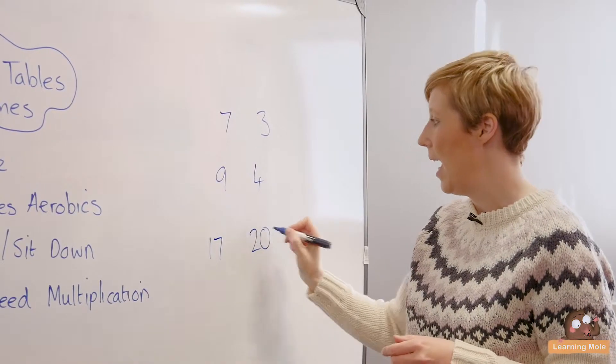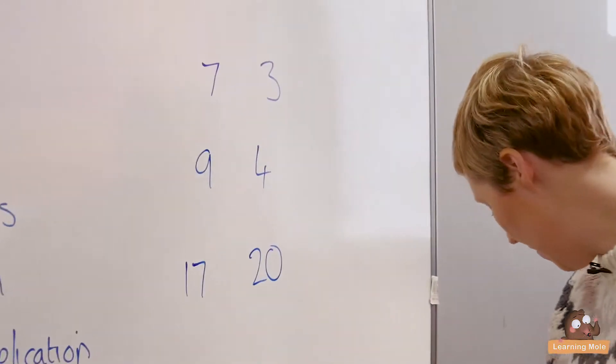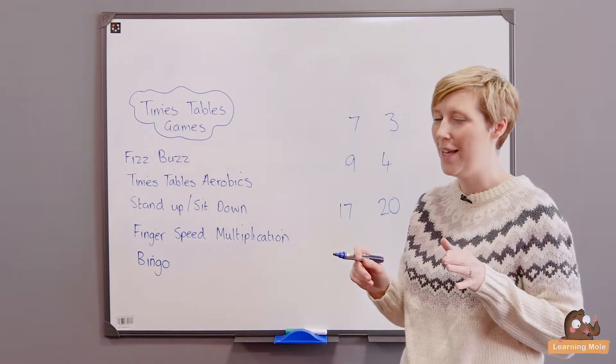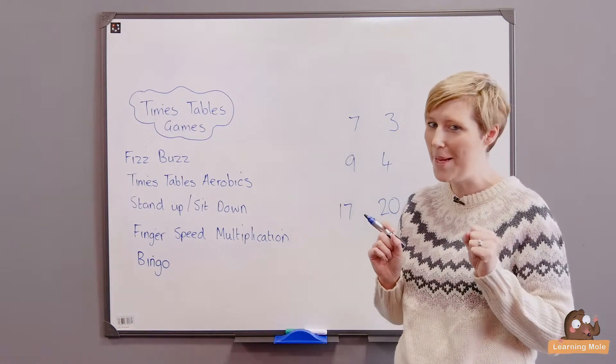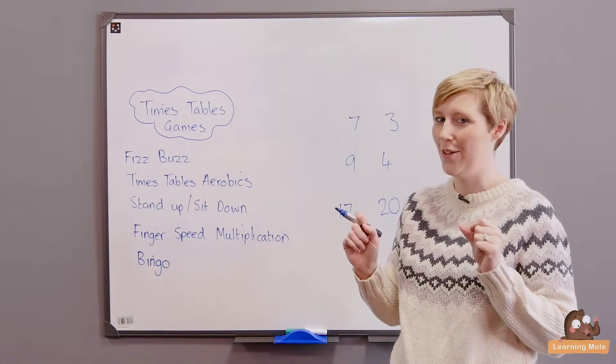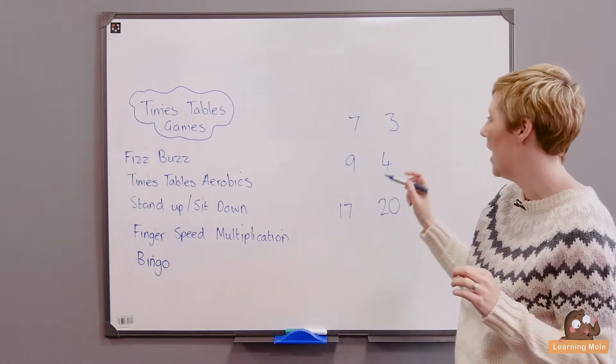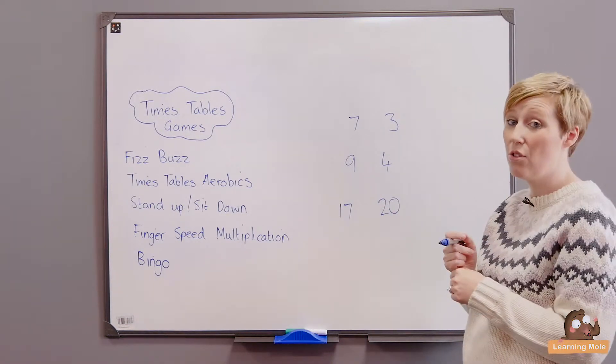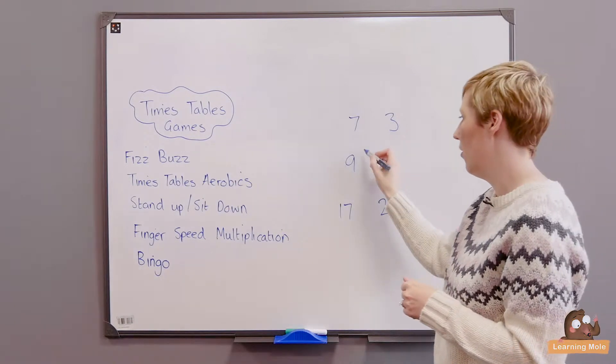So I would just ask them to choose six numbers between one and twenty-five, so any numbers you like: seven, three, nine, four, seventeen and twenty. And I might say, and I never tell them what times tables we're focusing on to begin with because then they can be a bit manipulative and write down all the times tables that are within that. I will then call out, does anyone have the answer to three times three? They can cross off nine. Anyone have the answer to two times ten? Twenty. And so on and so forth.